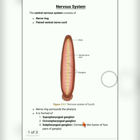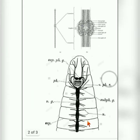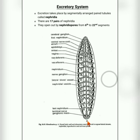Next we will see about the excretory system. The excretory system is responsible for eliminating waste from the body. In leech, the excretory system functions through structures called nephridia.